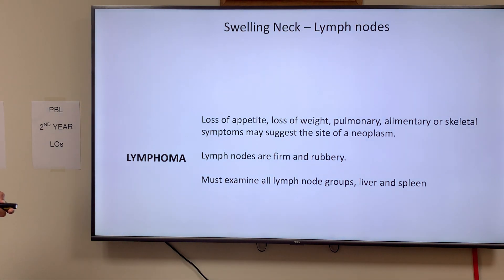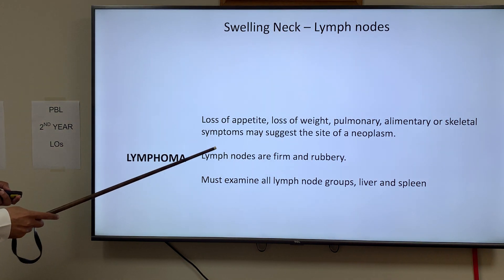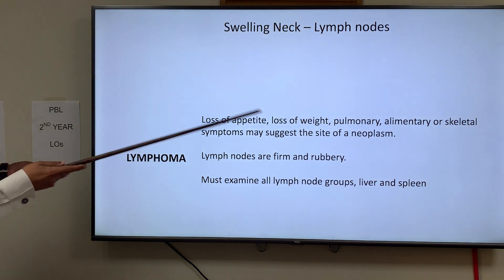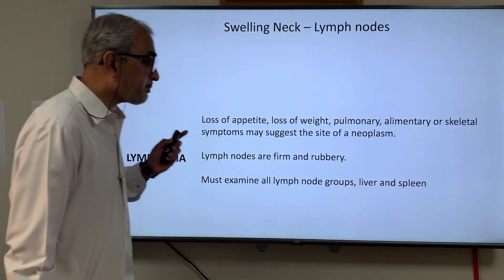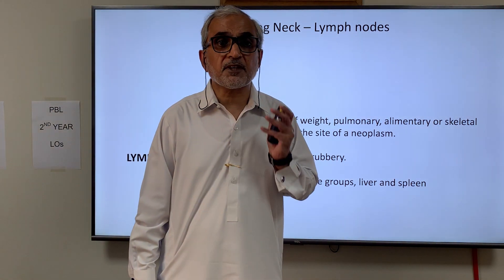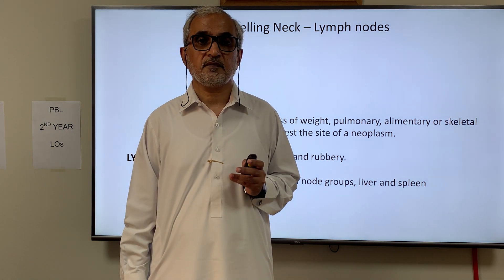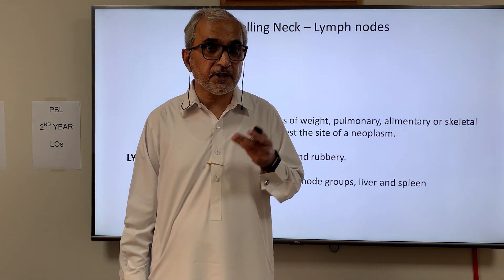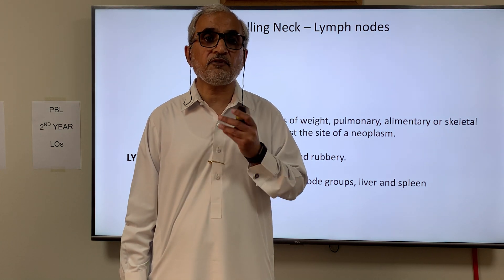For lymphoma: if there is loss of appetite, loss of weight, pulmonary or alimentary symptoms, and the lymph nodes are firm and rubbery — not matted — think of lymphoma. The distinction from tuberculosis is important: TB lymph nodes are matted, whereas lymphoma lymph nodes are firm and rubbery but not matted.